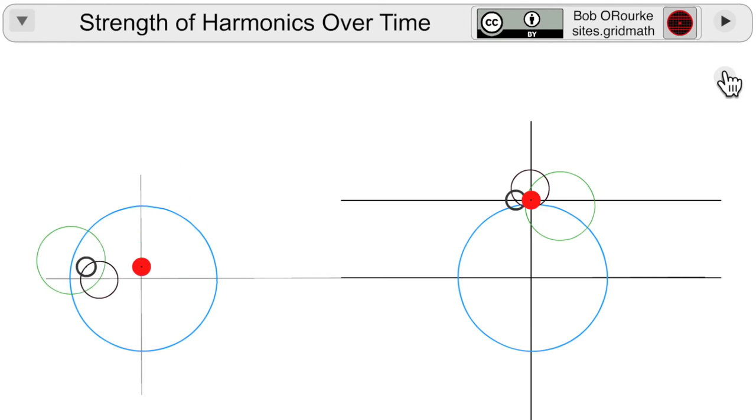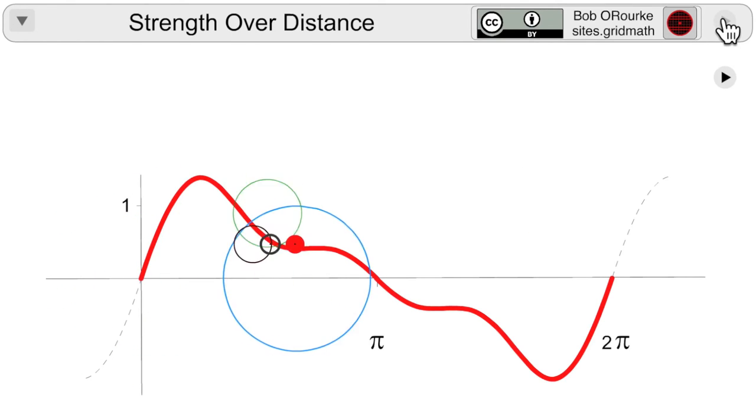When you move the Fourier circles horizontally at a steady rate, the complex wave is traced out.